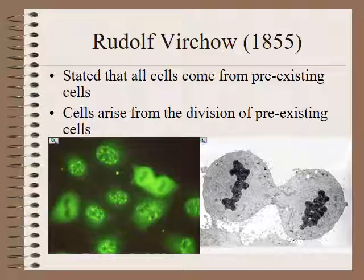And then finally, Rudolf Virchow stated that all cells must come from pre-existing cells — that is, cells must come from other cells before them, and they arise from the division of those cells. You can only get new cells from older cells.